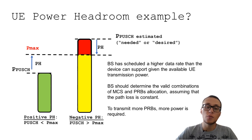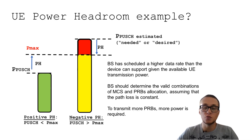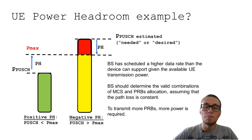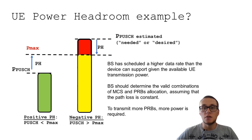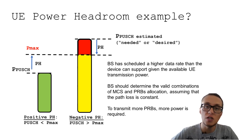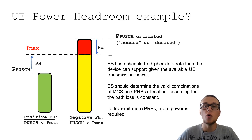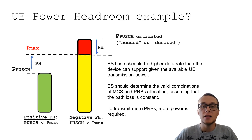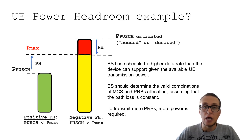This slide is a graphical representation of power headroom. From the left example, we can see positive values of power headroom — this is when PUSCH transmission does not exceed maximum transmitted output power. In this case, there is enough power for current transmission, and the base station may even decide to increase the modulation and coding scheme or give an order for more PRB allocation in the uplink direction.